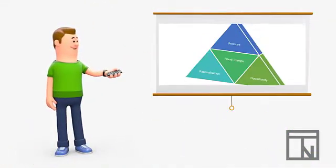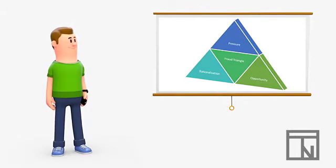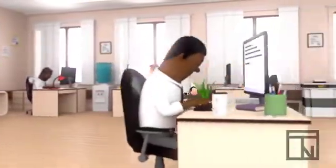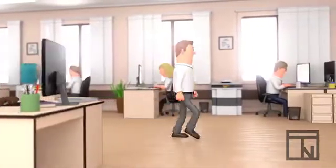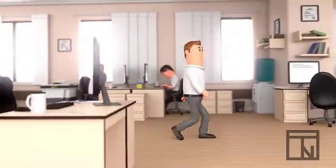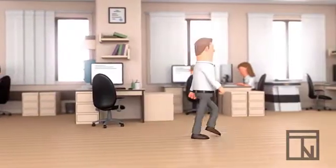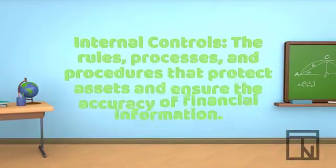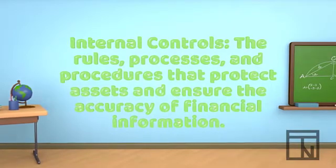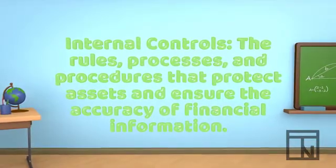In our previous video, we learned that there are three ingredients required in order for fraud to occur in a business. Of these three ingredients, there is only one that businesses really have control over: opportunity. It's the business's responsibility to ensure that employees and outsiders don't have an opportunity to steal or misrepresent the business. It does this by creating and implementing something called internal controls — the rules, processes, and procedures that a business creates to protect its assets and ensure the accuracy of its financial information.